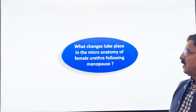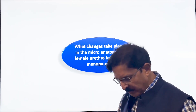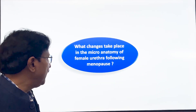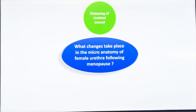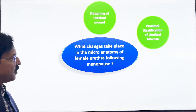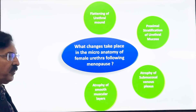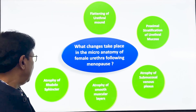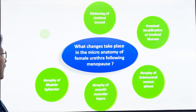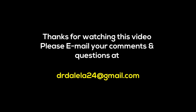To summarize the changes that happen after menopause: flattening of the urethral mound, proximal stratification of urethral mucosa, atrophy of the submucosal venous plexus, atrophy of smooth muscle layers, atrophy of the rhabdosphincter, and atrophy of periurethral glands. Thank you very much. If you have any questions or comments, write to me by email. Have a very good day. Bye-bye.